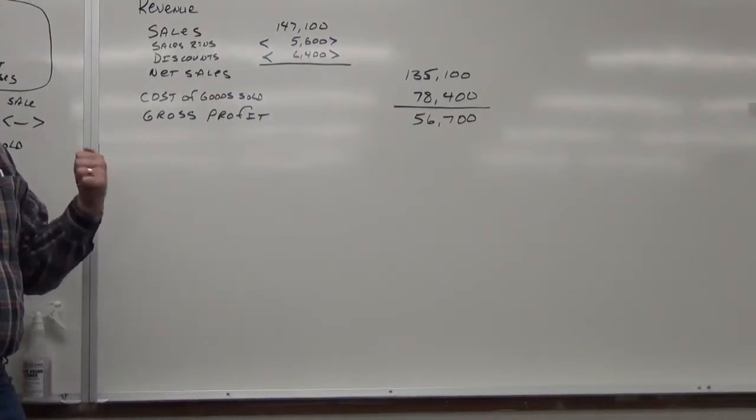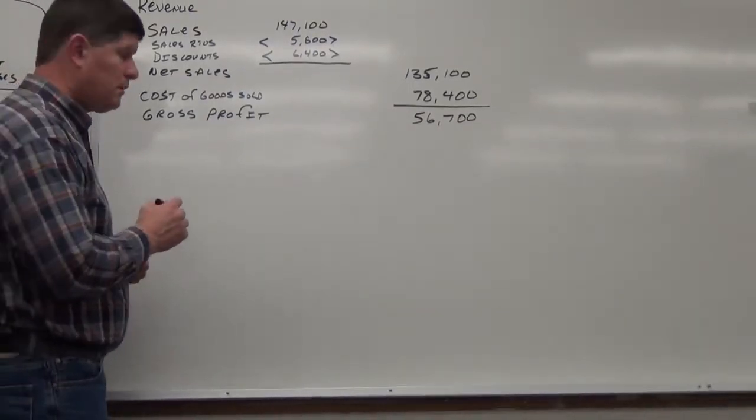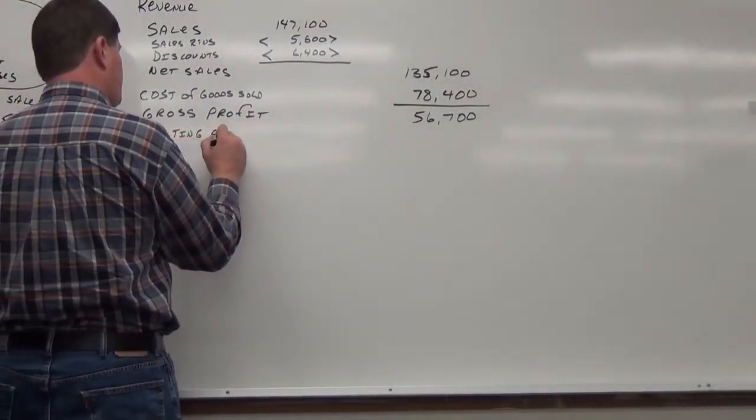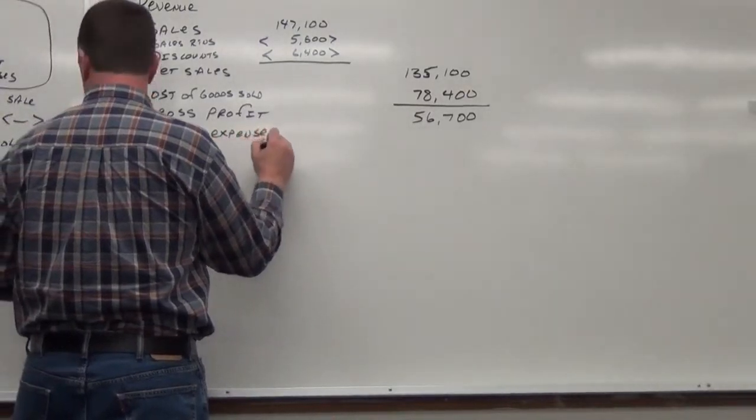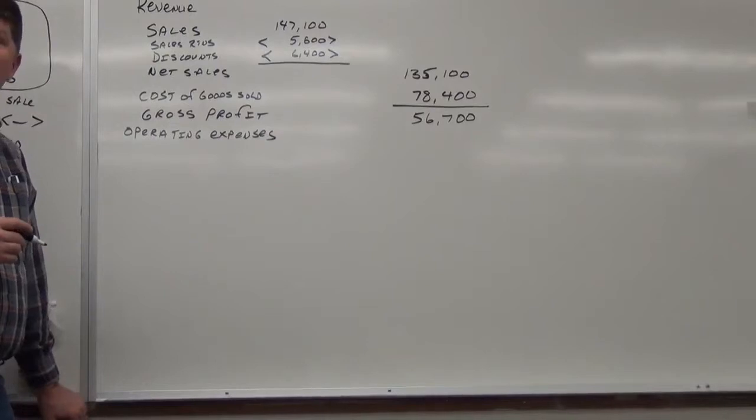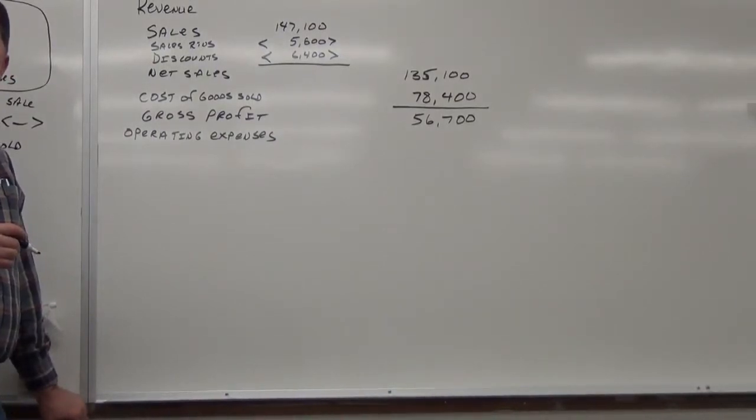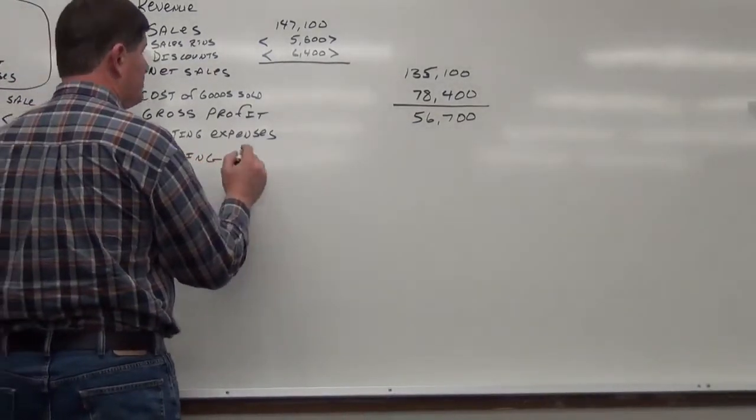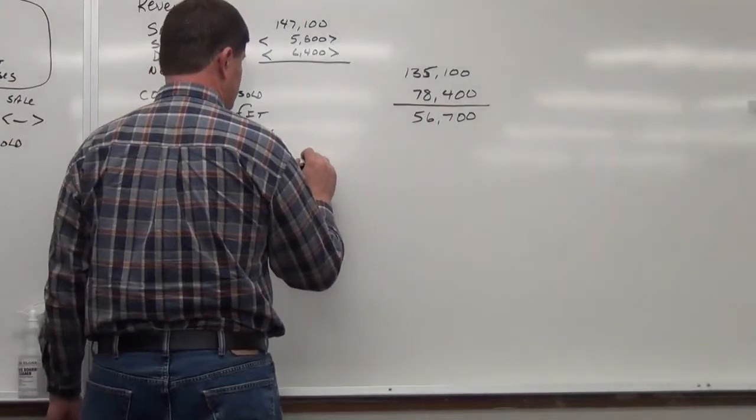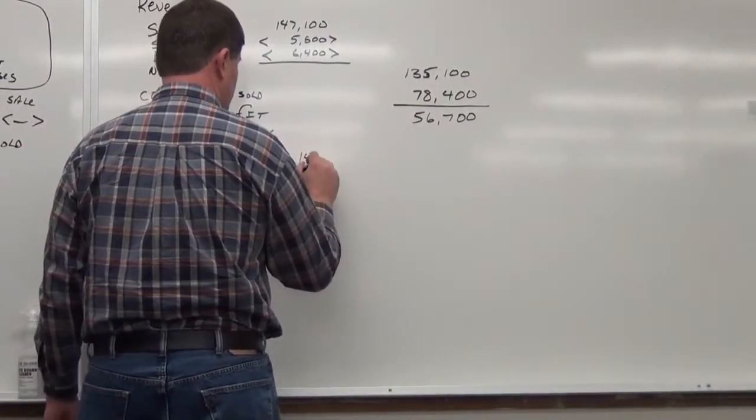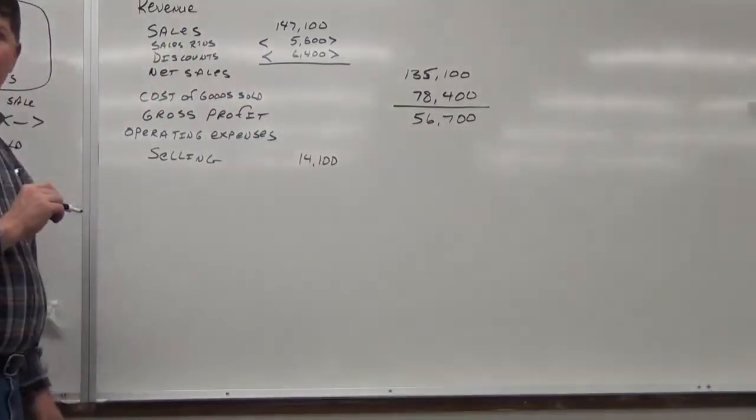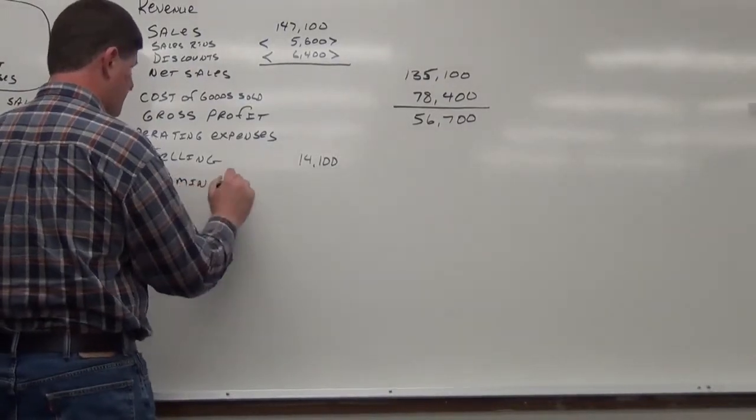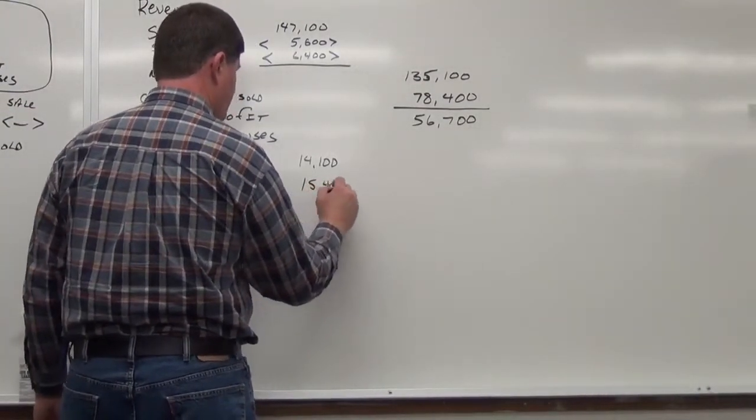That plus the beginning inventory is everything we could have sold. Cost of goods available. Less ending inventory gives me, here's what I really sold. The cost of what I really sold. Okay. So, the book just made me do that for nothing. They give us cost of goods sold. How much is the cost of goods sold? $78,400. $78,400. Even? Okay.